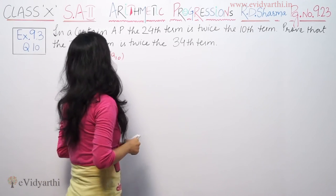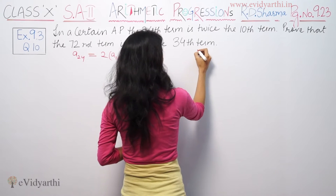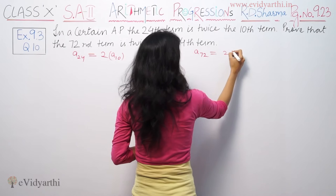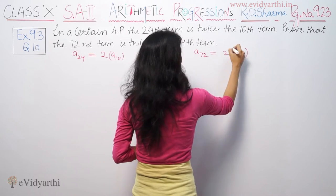Prove that 72nd term, A72, is twice the 34th term. This is to prove.